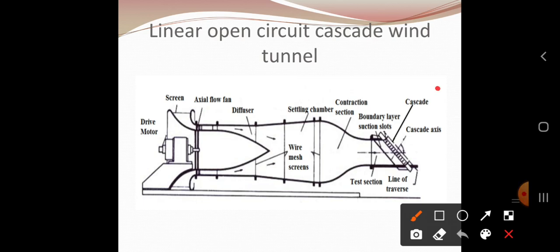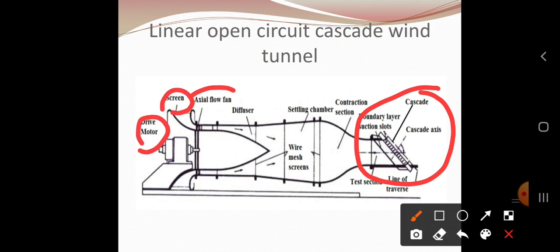We will be having a cascade setup at the final end. Similar to the wind tunnel, we have a driving motor and screen, then axial flow fan, then a diffuser section, then a settling chamber where we have wire mesh screens in order to remove the obstacles. Then we have a contraction section and boundary layer suction slot. Here we have a test section.